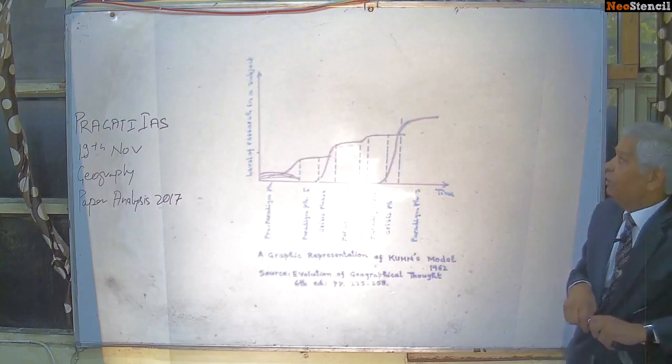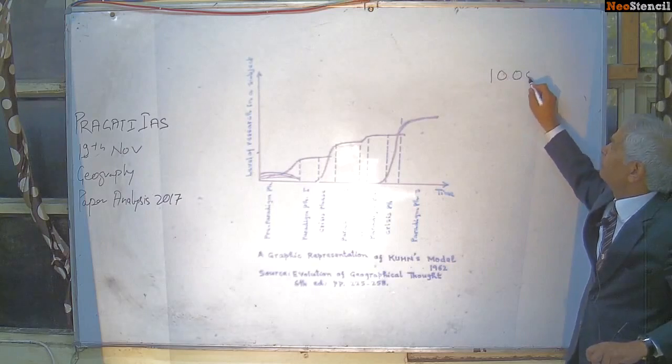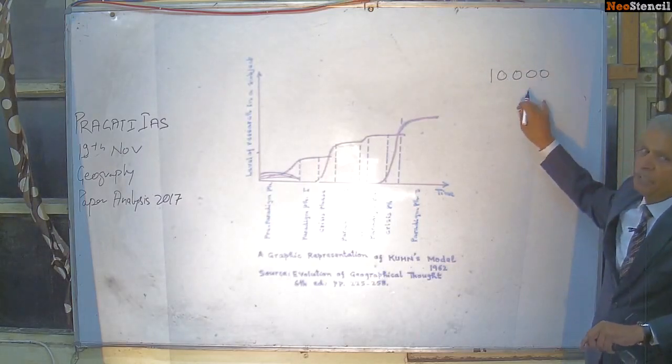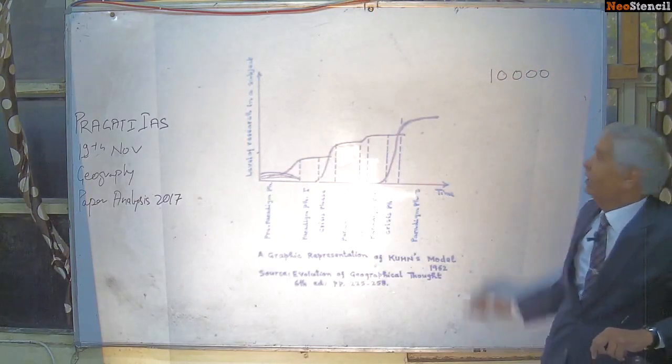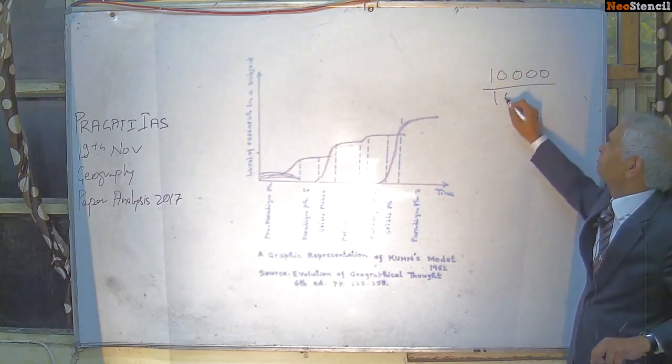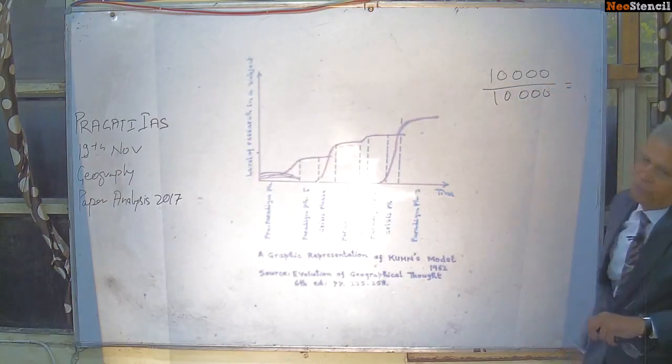When actually universal laws means if you are trying a law ten thousand times, ten thousand times, ten thousand times, the result should be the same. Then it is a universal law. The result will be the same.